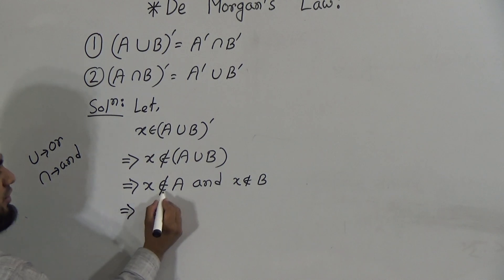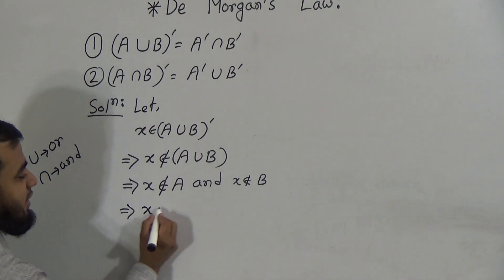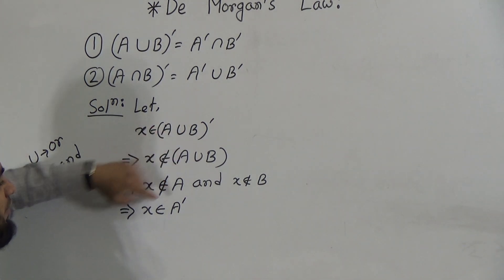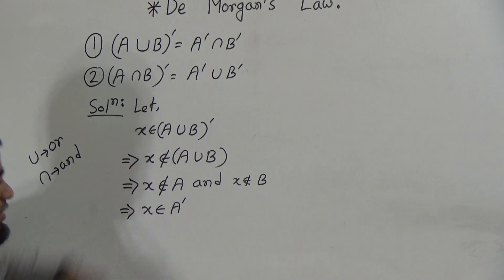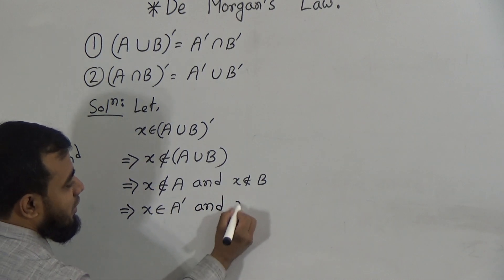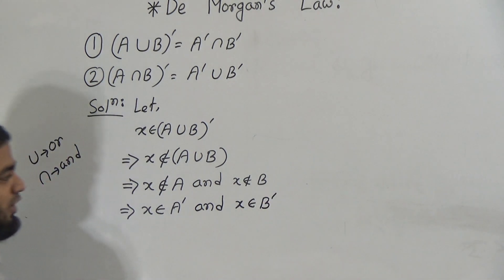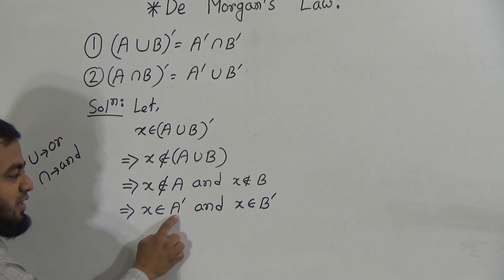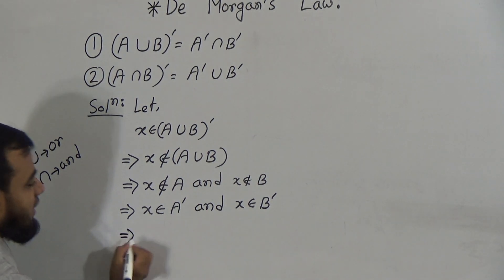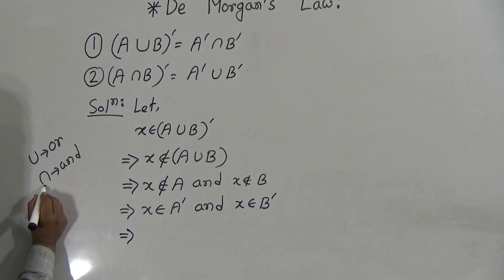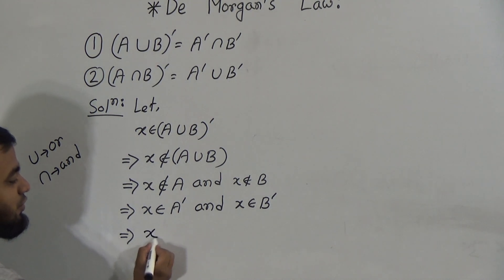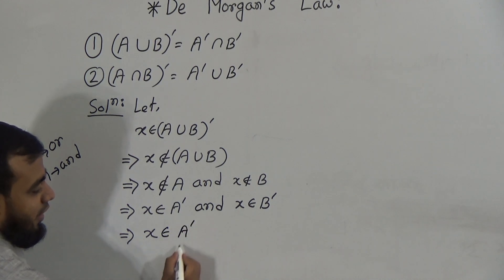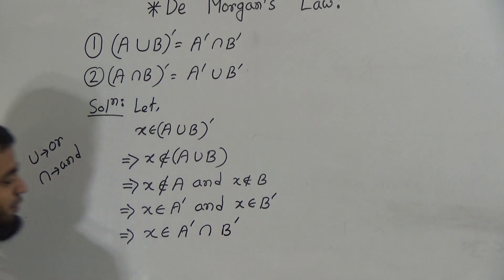x doesn't belong to A means x is an element which belongs to A complement. So we can write x belongs to A prime, and x belongs to B prime similarly. Now in place of 'and' we usually use the intersection sign. There is no negative sign here, so we use intersection: x belongs to A prime intersection B prime.